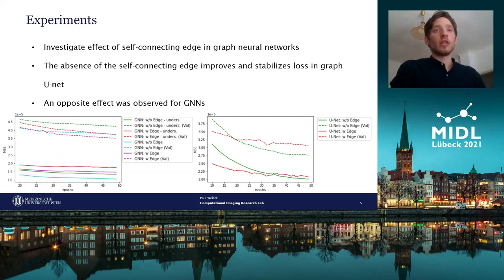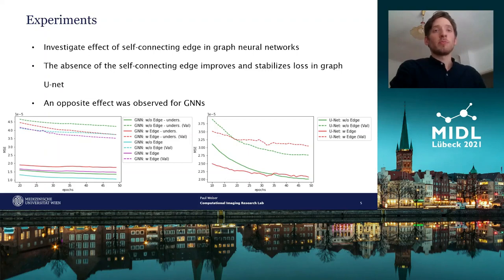First, the four-layer GNN was trained on fully sampled and undersampled data, as well as with and without self-connecting edges. The training and validation loss computed by the mean squared difference is shown in the left figure. We can clearly see that self-connecting edges improve the validation loss during the training of the network in both cases.